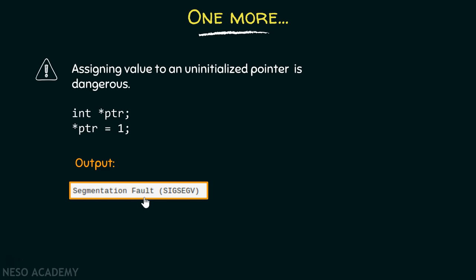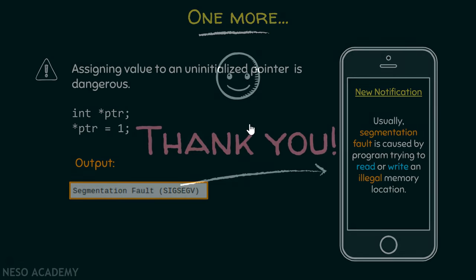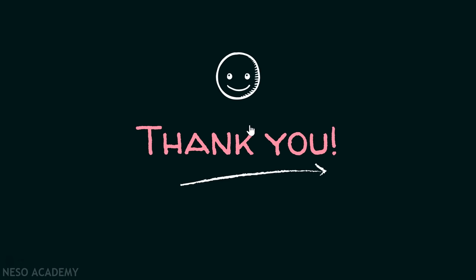Segmentation fault is usually caused by a program trying to read or write an illegal memory location. When we apply the dereference operator to a pointer that is not pointing to any valid location, internally it may point to some illegal memory location that we as users have no rights to access. Therefore, it produces a segmentation fault error. That's it for now — thank you for watching this presentation.